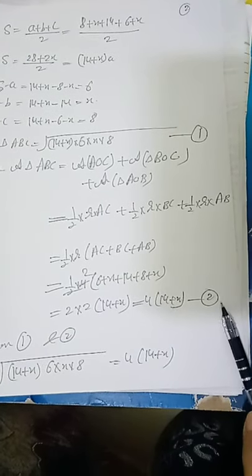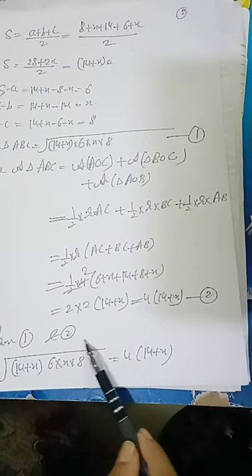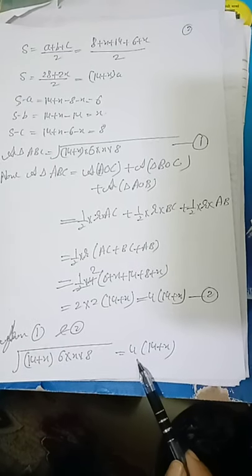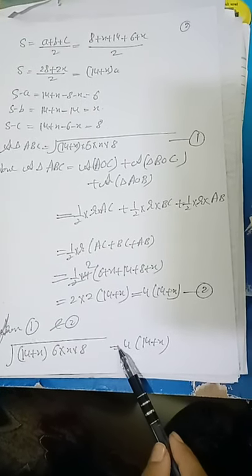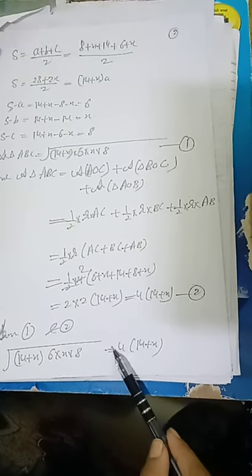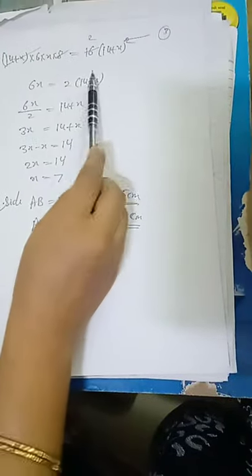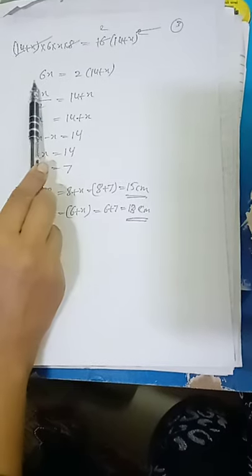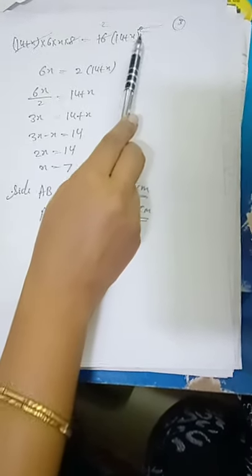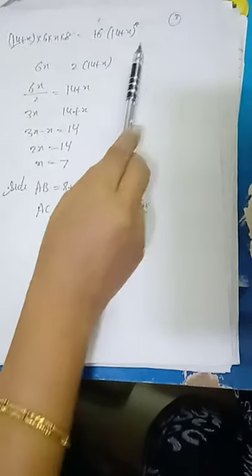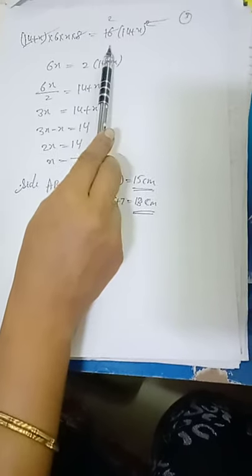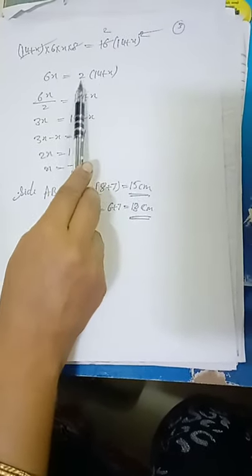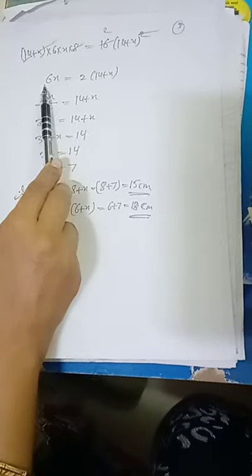We solve and area of triangle ABC is again found to be R into 14 plus x divided by 2. From equations 1 and 2, both are area of triangle ABC. So we equate the two expressions and solve. Taking square on both sides, 14 plus x cancels out. 8 and 16 are cancelled.